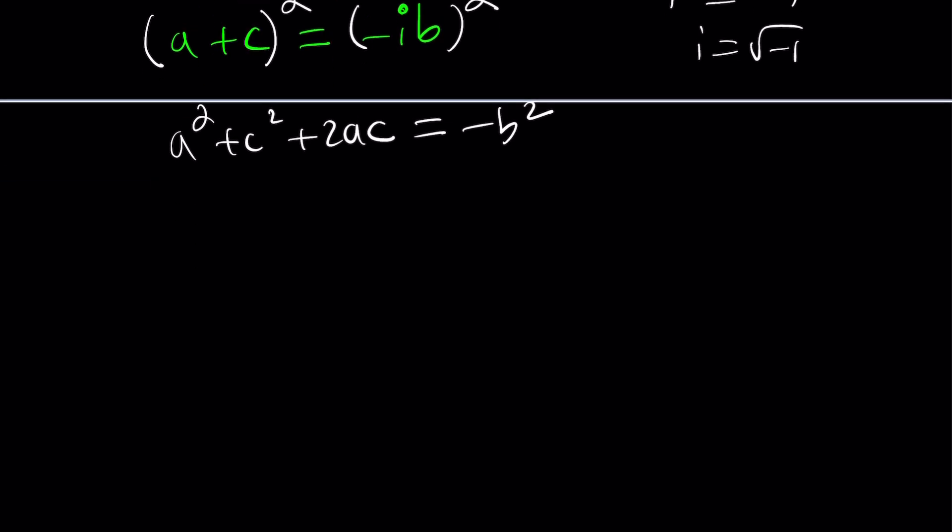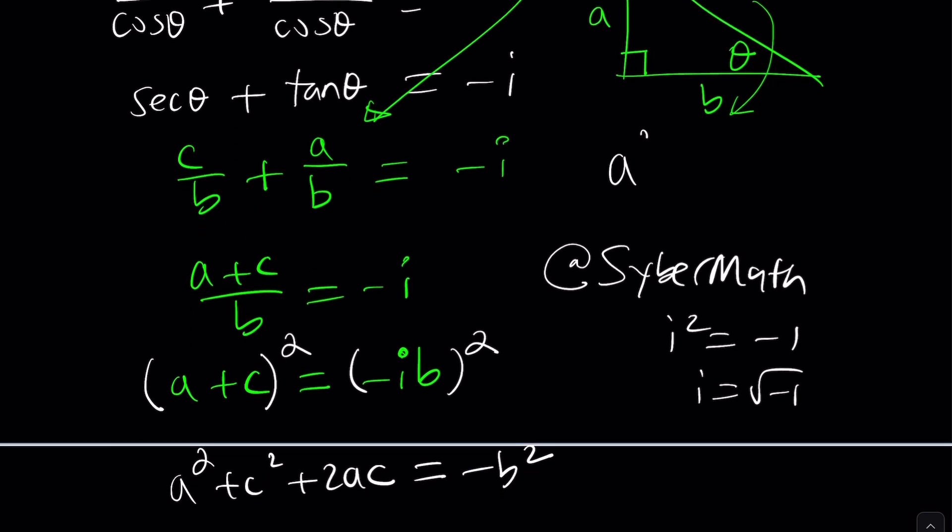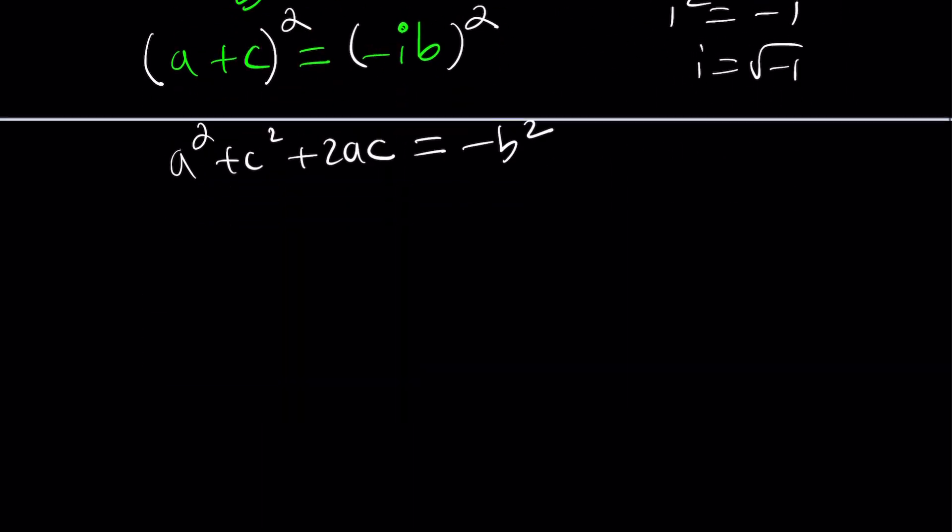So we square the left hand side and right hand side, i squared is negative 1. And this will give us negative b squared. Now here's what's interesting about it. We have a right triangle so we can use the Pythagorean theorem. a squared plus b squared is c squared. Great. Can we use that information in our expression? Probably.